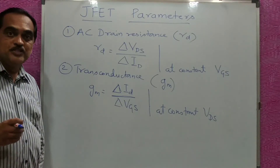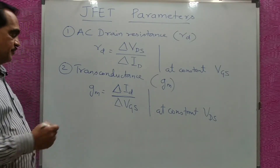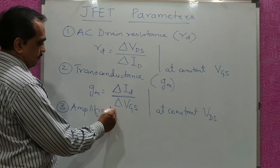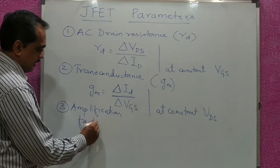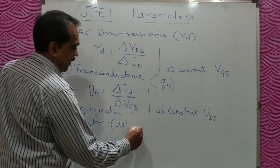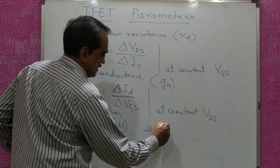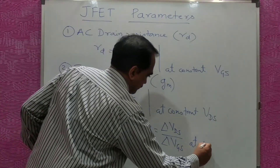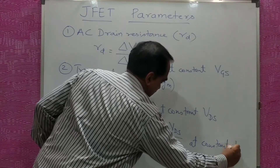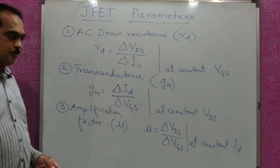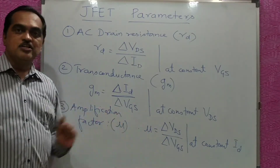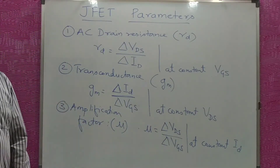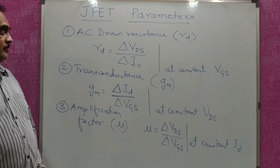The third parameter is amplification factor, denoted by Mu. Mu is given as delta VDS upon delta VGS at constant ID. That means it is the ratio of change in output voltage to the change in input voltage — delta VDS upon delta VGS at constant ID. These are the three parameters of JFET.